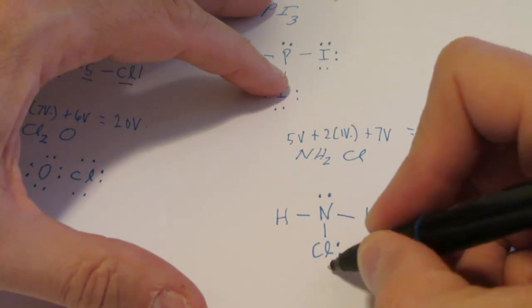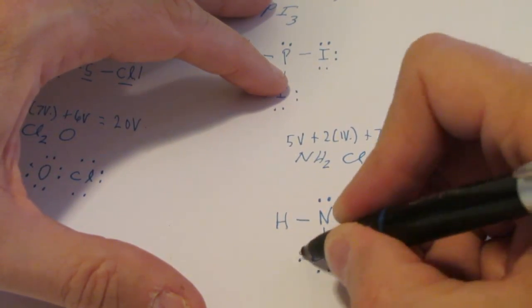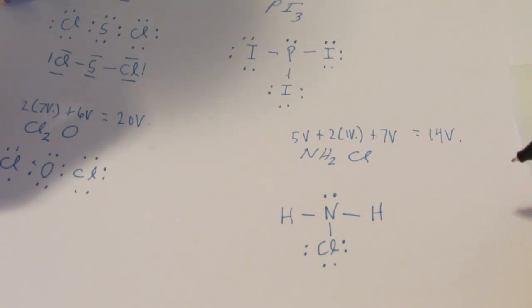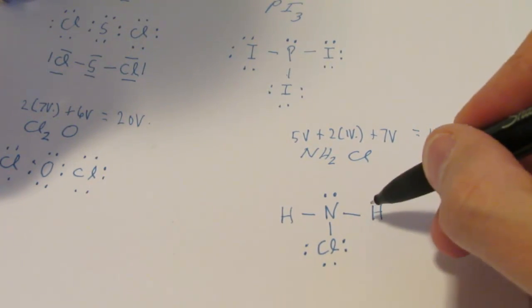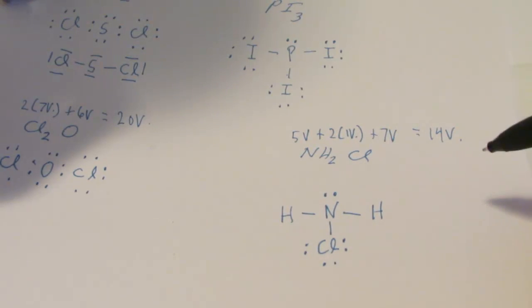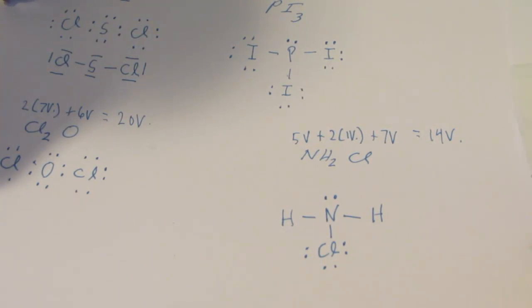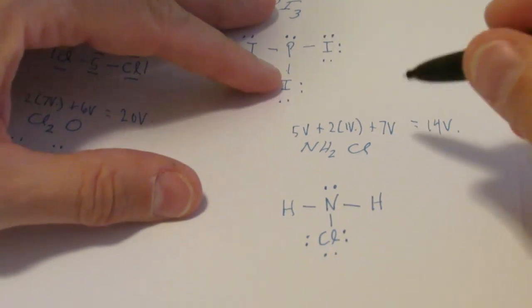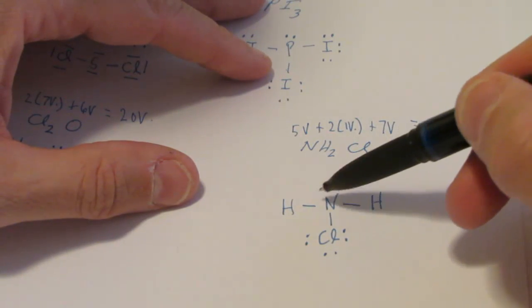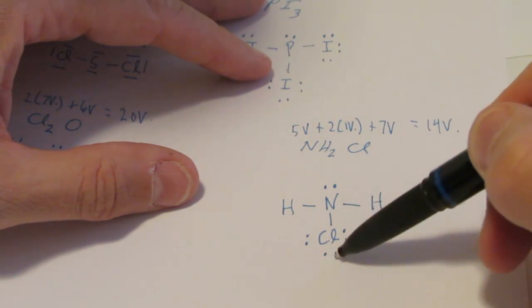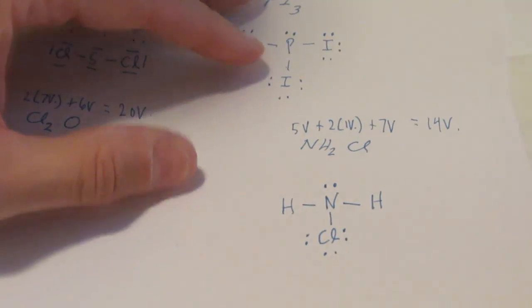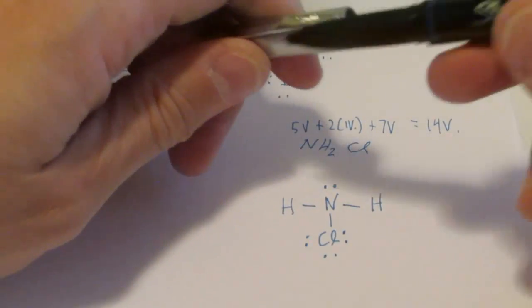But I'm not going to touch the hydrogens. Remember the hydrogens are an exception to the octet rule. They only need one pair or two electrons around them to have a noble gas configuration. Let's see how many electrons I've used. Two, four, six, eight, ten, twelve, fourteen. Ta-da! Once again, that's a good Lewis structure.